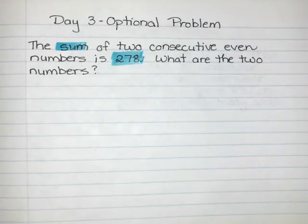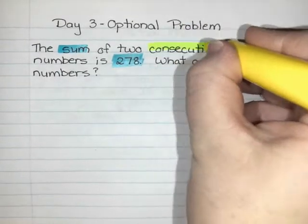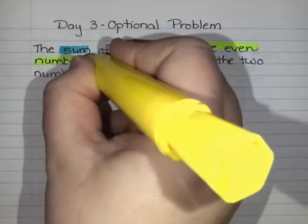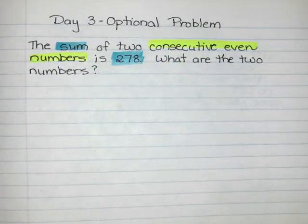For the comparison with consecutive numbers, it looks a little different. It's not like one number is five more than another number. The comparison is that they are consecutive even numbers. That is the comparison.